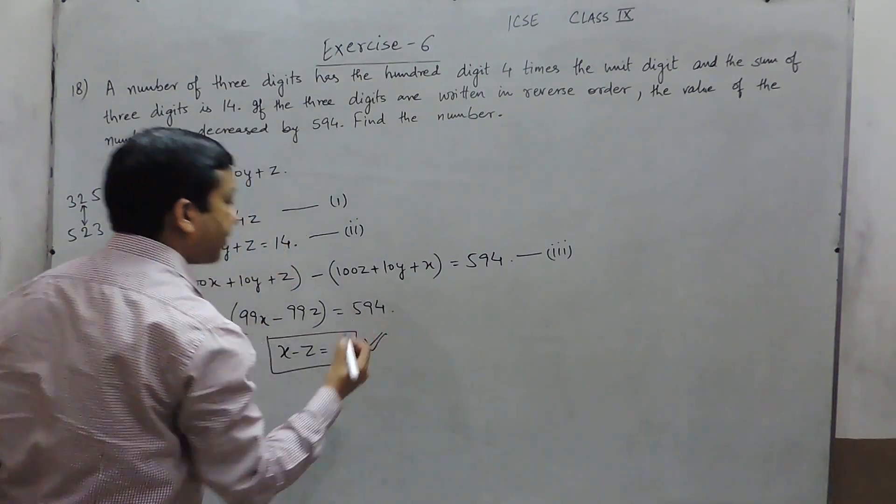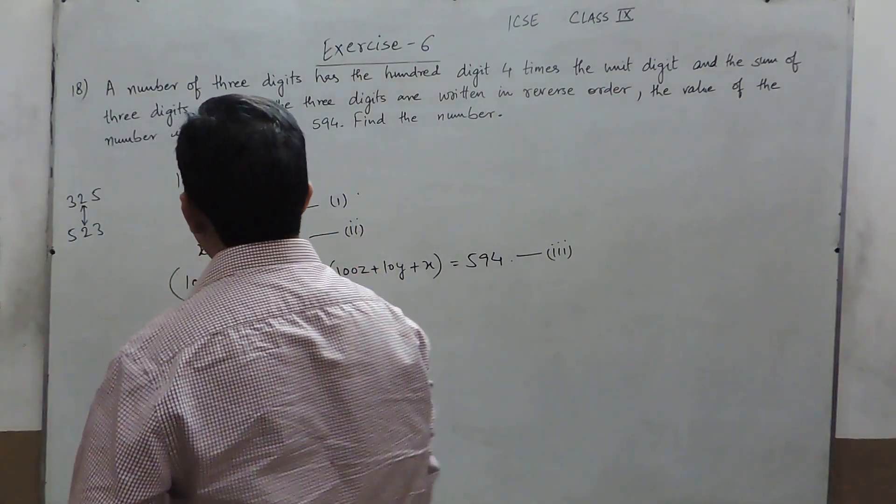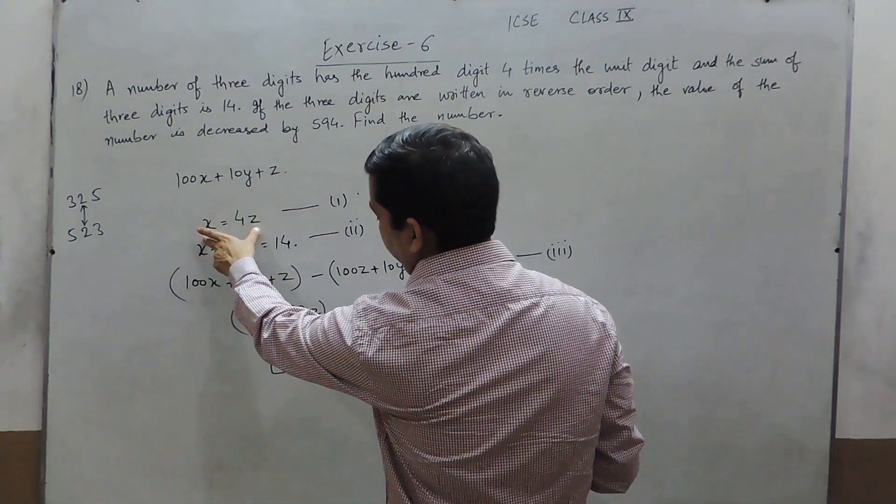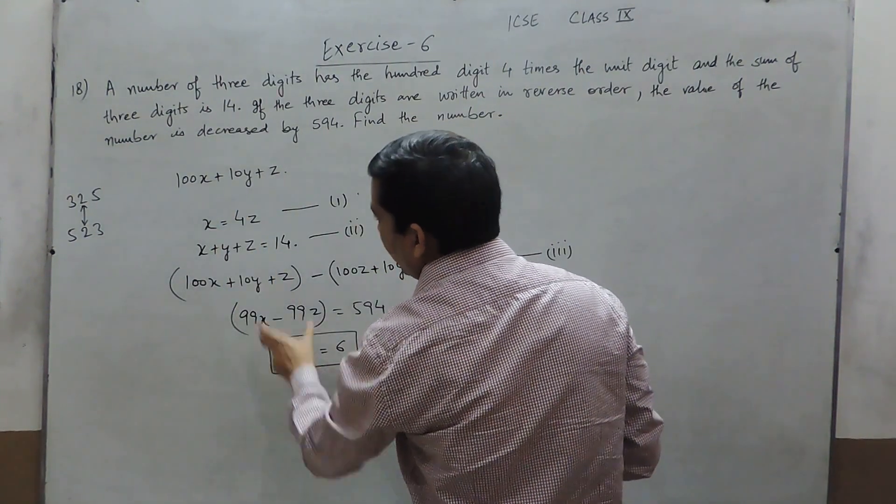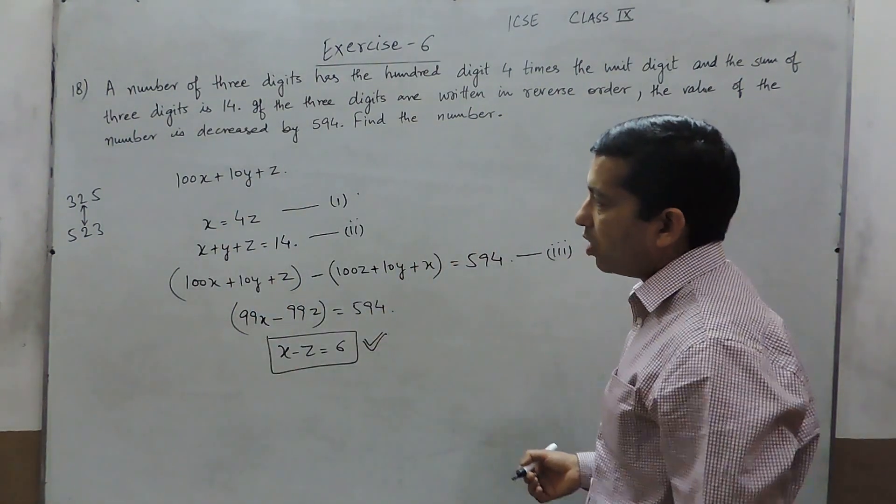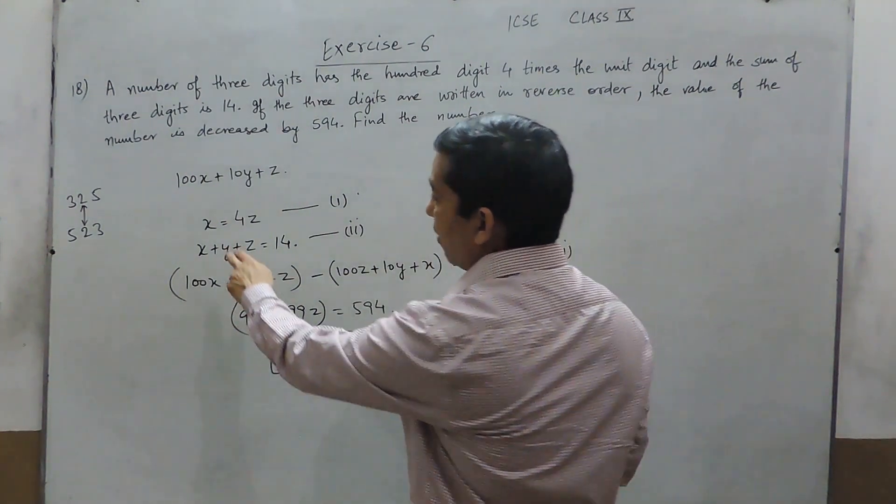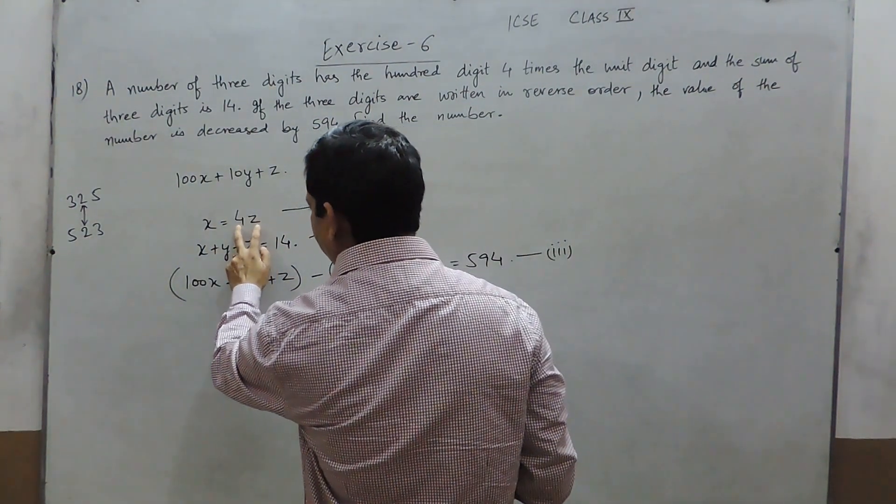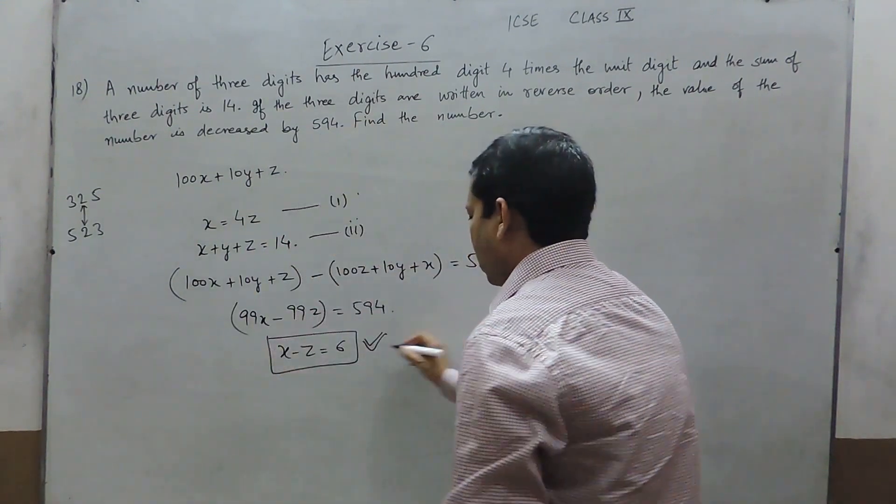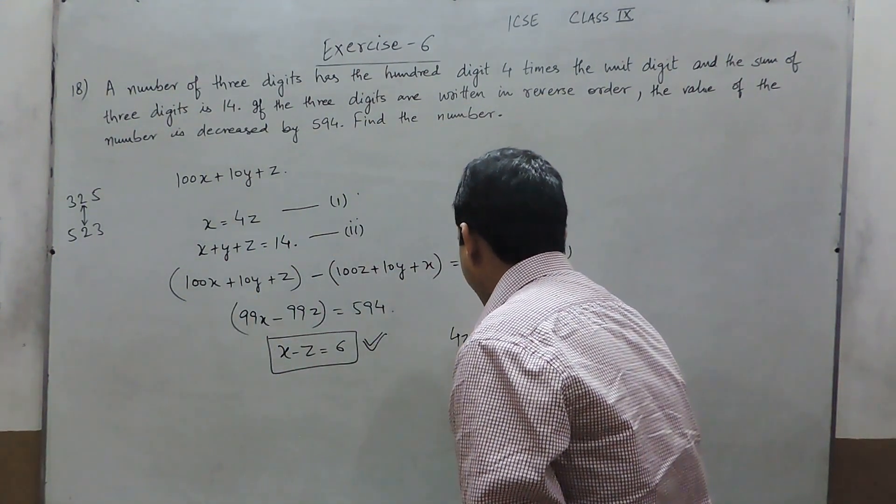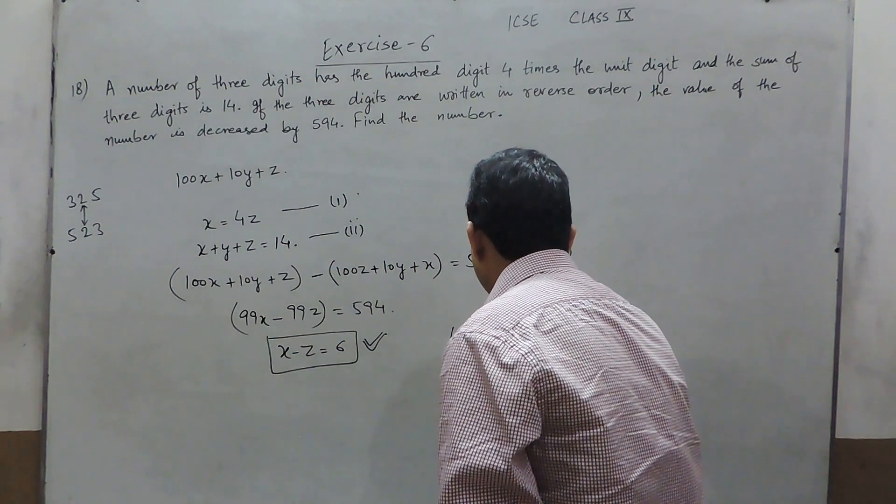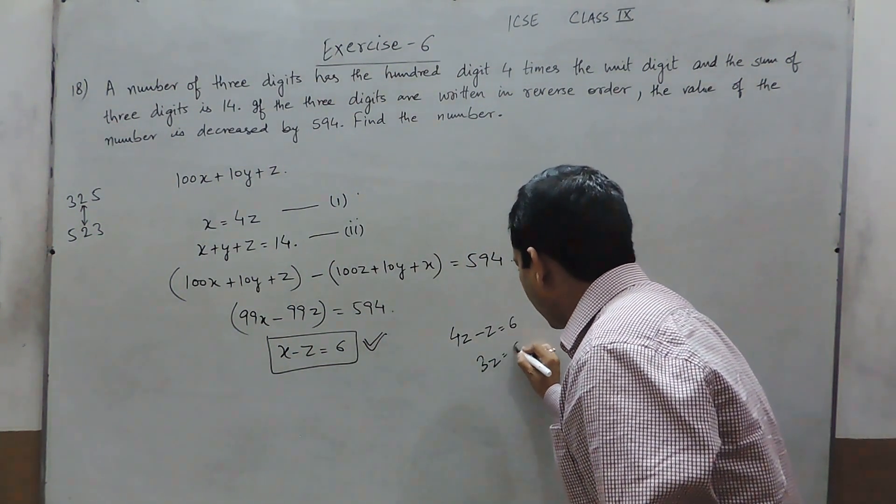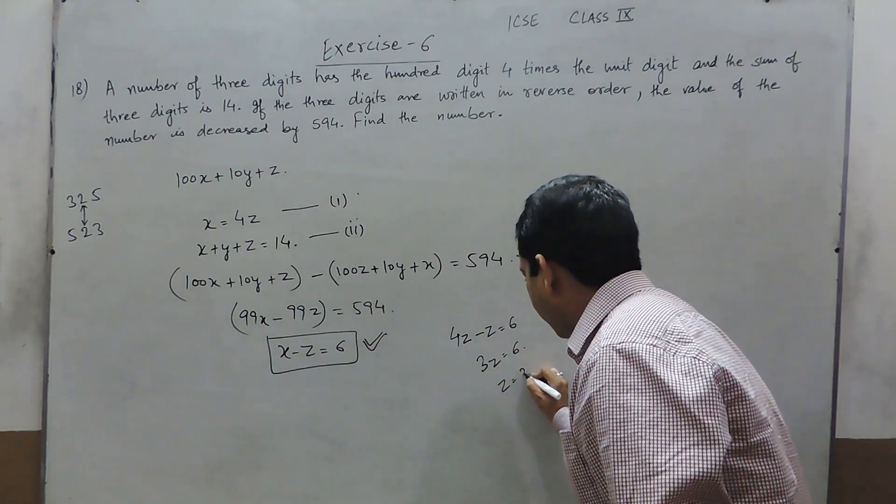So from here and from the first equation, we can solve the value of z. When we know the value of x as 4z and putting this value in this equation, it will be written as 4z minus z equals 6, or 3z equals 6, so the value of z becomes 2.